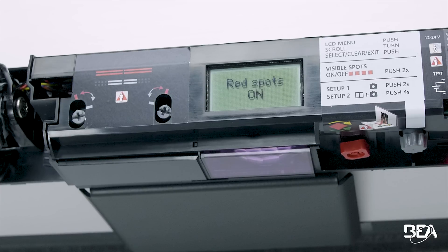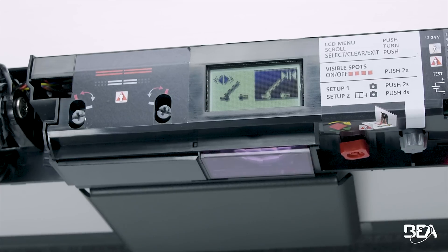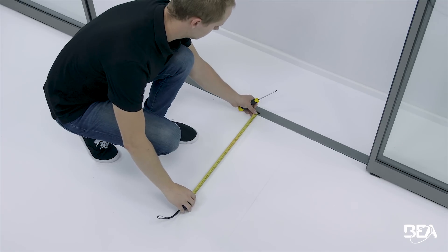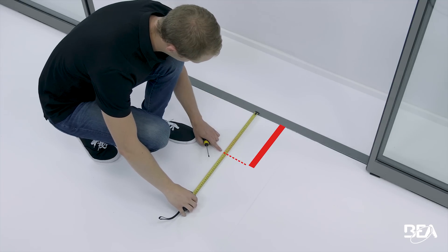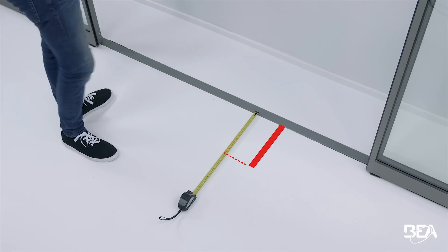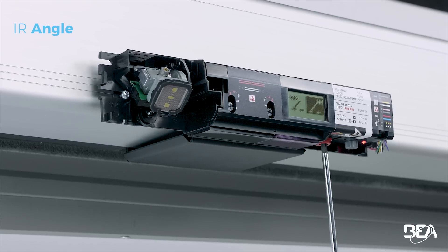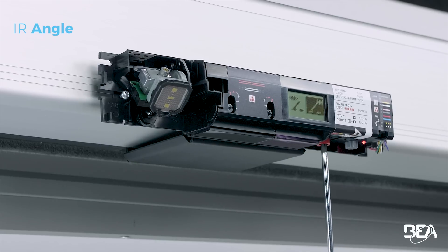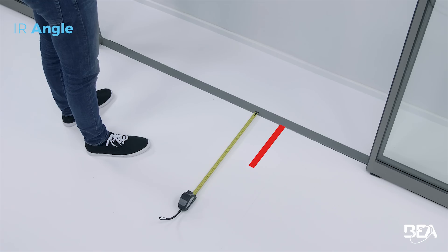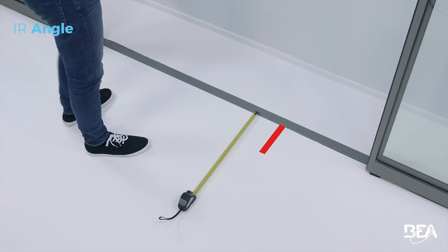Two short pushes on the grey button activate the visible spots on the floor. Measure the distance between the door and the visible spots, which represent the inner curtain of the safety field. By turning the red adjustment knob using a cross-headed screwdriver or your hand, you move the IR curtains closer to or further away from the door.